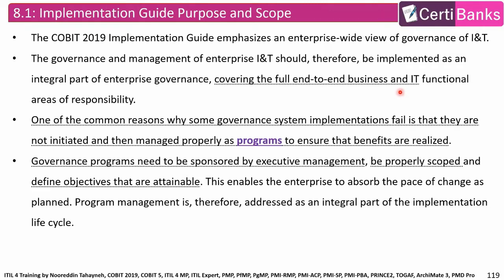The first topic is Implementation Guide Purpose and Scope. The COBIT 2019 Implementation Guide emphasizes an enterprise-wide view of governance of information and technology. Therefore, the implementation of the governance system should be an integral part of enterprise governance, covering the full end-to-end business and IT functional areas of responsibility. One of the common reasons why some governance system implementations fail is that they are not initiated and then managed properly as programs to ensure that benefits are realized. Governance programs need to be sponsored by executive management, be properly scoped, and define objectives that are attainable or achievable.